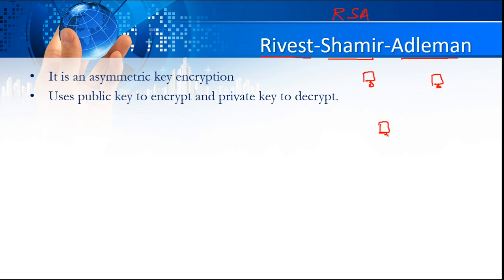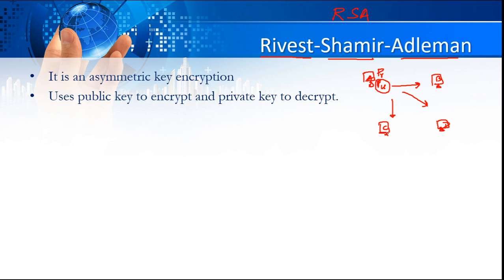If you have, for example, some computers in your network — let's assume A, B, C, and D — if these four computers want to have encrypted communication, every computer is going to generate two keys. A, B, C, and D will each generate two keys: one called the private key and one called the public key. The public key will be shared with everybody, but the private key will be kept as a secret on that particular machine and will never be shared with any other computer.